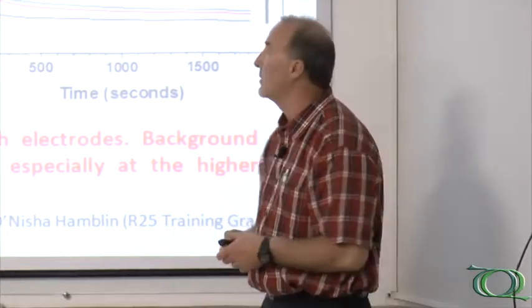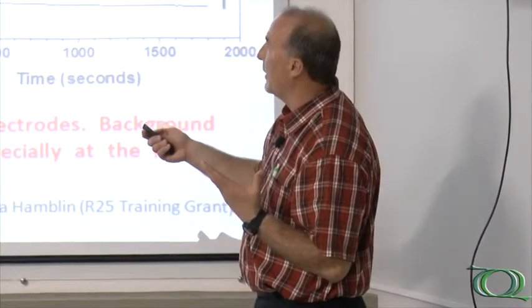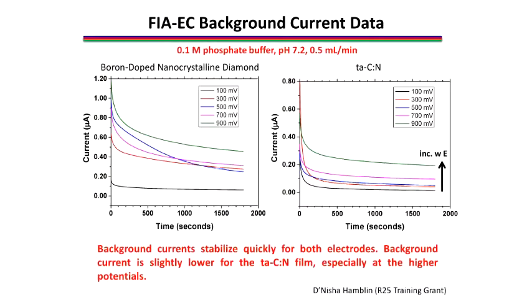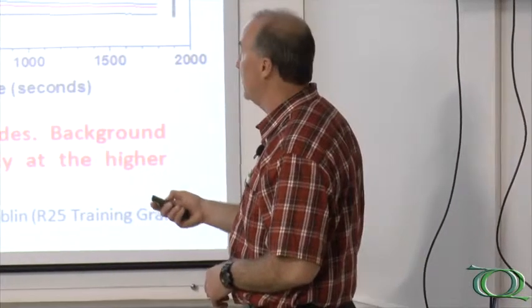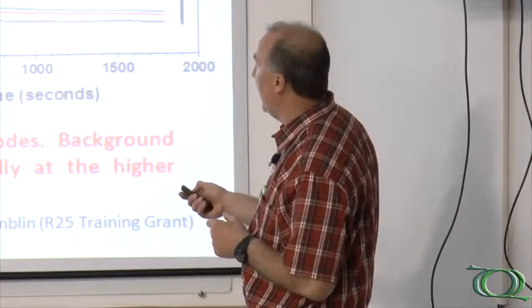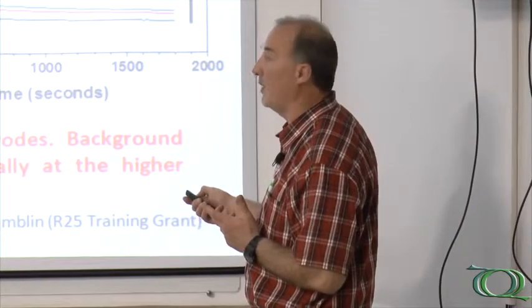Here's data comparing a boron-doped diamond electrode on the left and a conducting nitrogen TAC film on the right. These are background currents plotted as a function of time at different potentials, from 100 to 900 millivolts. For the diamond electrode, as you increase the potential the current increases as expected, and it decays and stabilizes in less than about 500 seconds — very characteristic of diamond. On glassy carbon at these potentials it can take 20–30 minutes to stabilize. For the TAC electrode, with the same area, within 100 to 200 seconds we're already at a stable background — remarkably fast.